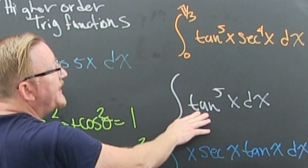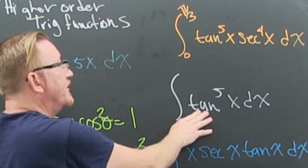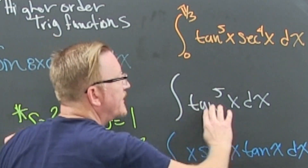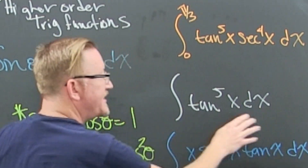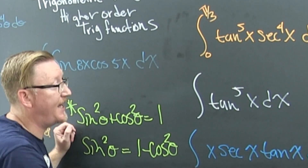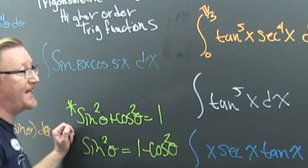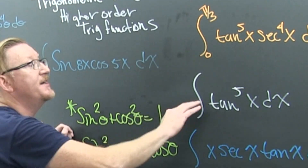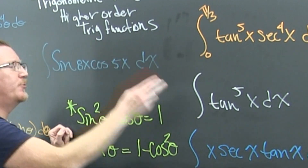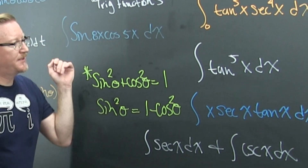Probably one of those Pythagorean identities — you're looking for the secant squared, so peel off two of those tangents and convert them into secants. One of them may be the secant squared; the other one will be the tangent to the third, so you'll have to do that one more time. That one uses the Pythagorean identity twice.